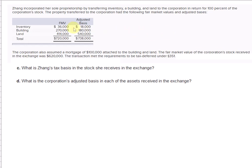We can see that the fair market value of the inventory was $36,000, the building $270,000, and the land $414,000. The adjusted basis was $18,000, $180,000, and $540,000.